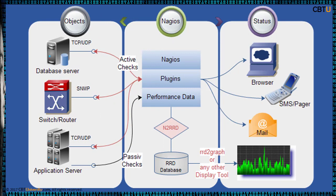This is the operating principle of Nagios. Nagios conducts active checks and passive checks on the nodes and objects. It interacts with the RRD database for reporting, and sends alerts and events to the browser, email, SMS, pager, etc.